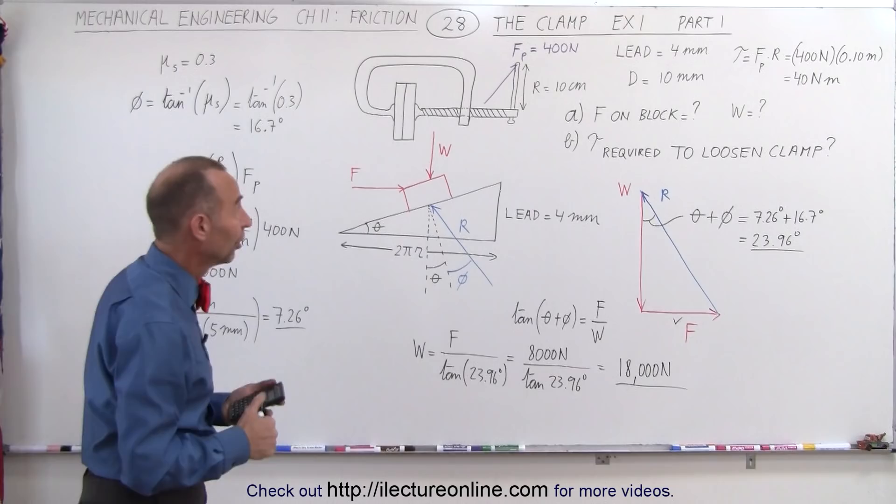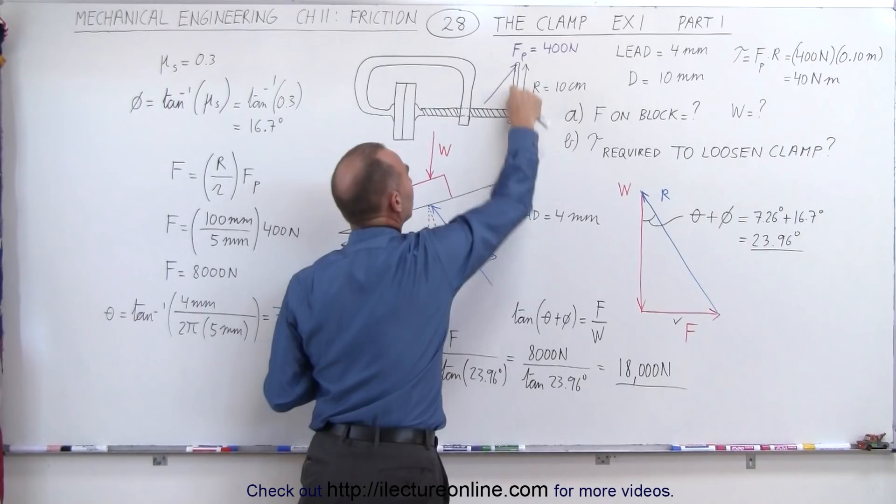And that means we have a total force of very close to 18,000 newtons applied to the clamp, which is quite a bit of force. So you can see that because the diameter of the screw is so small and the moment arm is relatively large with a fairly benign amount of force,